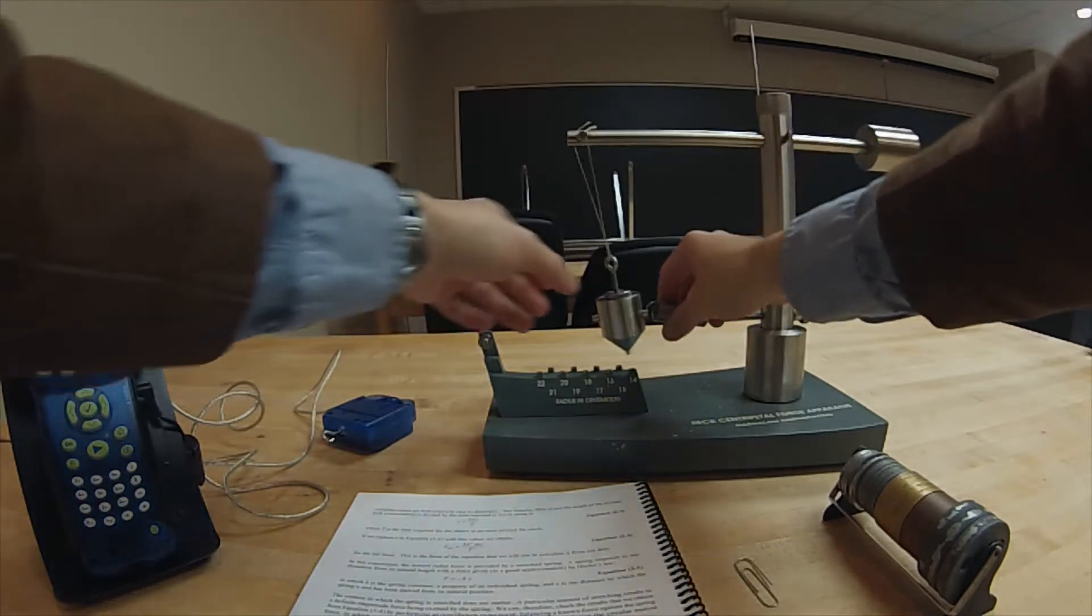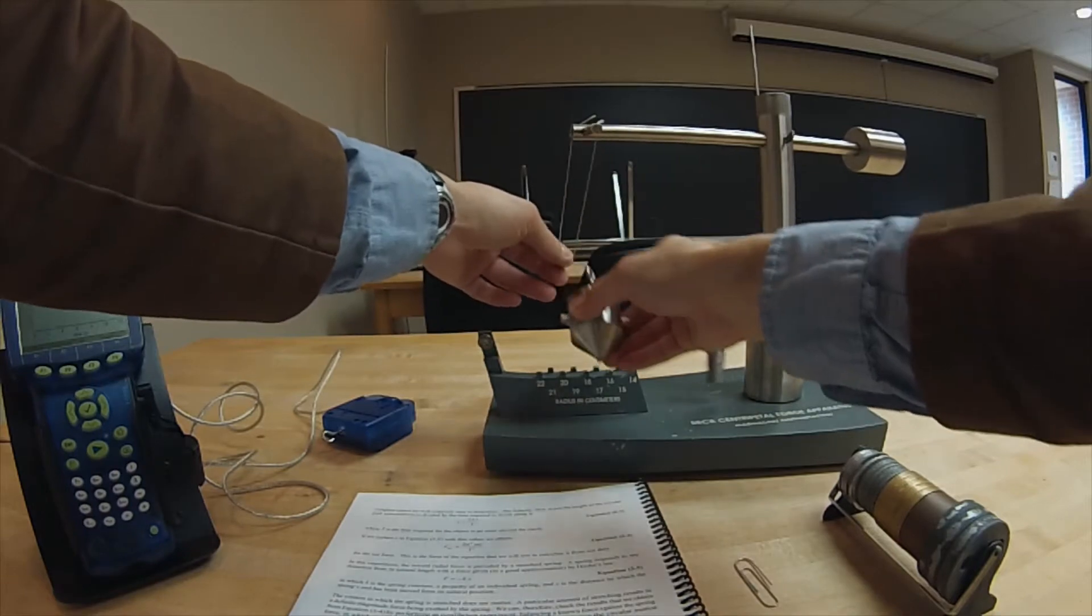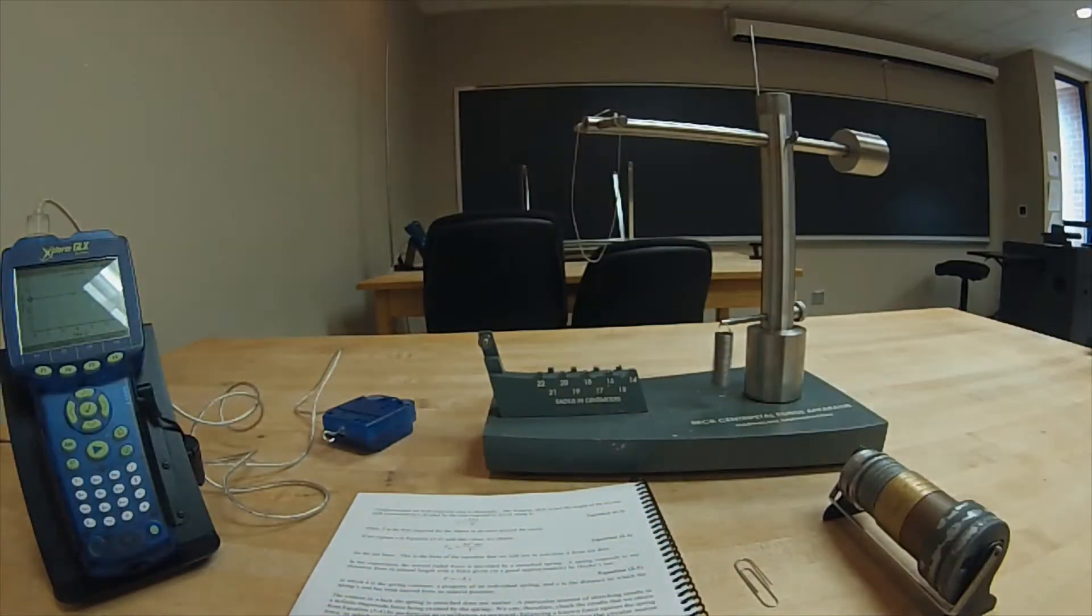To begin this experiment, we'll need to detach the silver bob from the centripetal force apparatus by unhooking the spring and removing it from the hanging string.